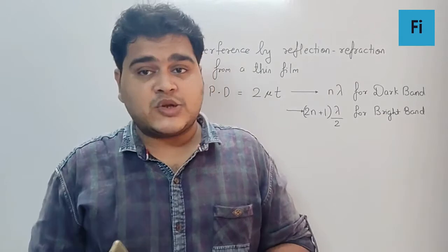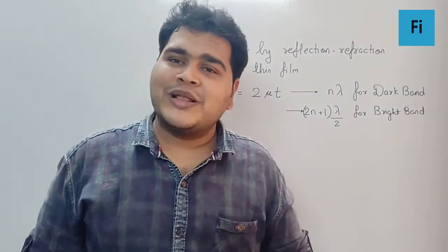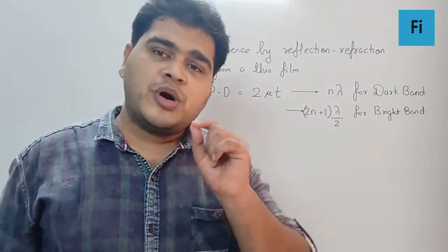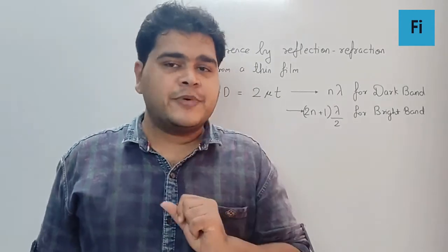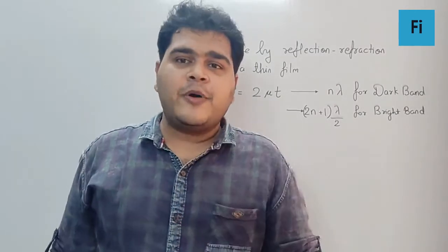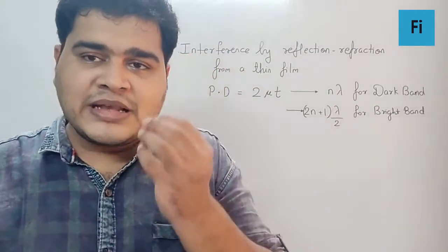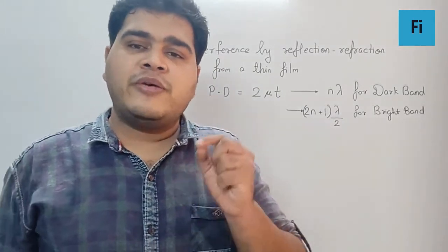Because the reflection causes the change in phase of the light by π radian or 180 degrees, because of which one of the two waves will exactly flip.